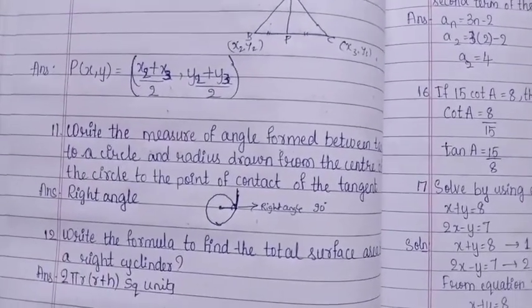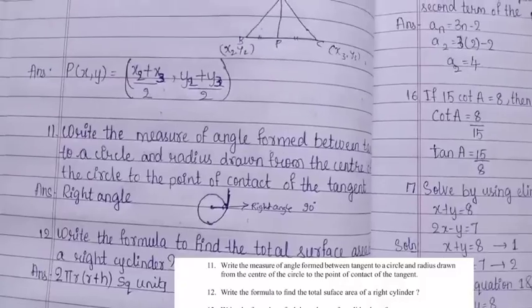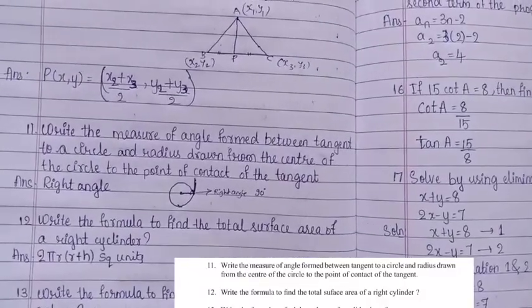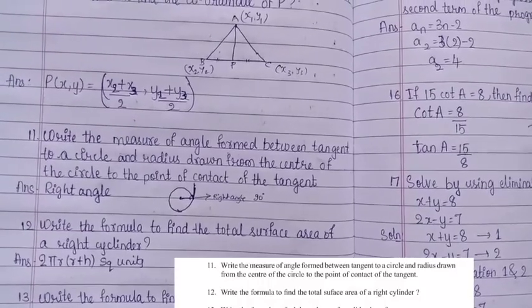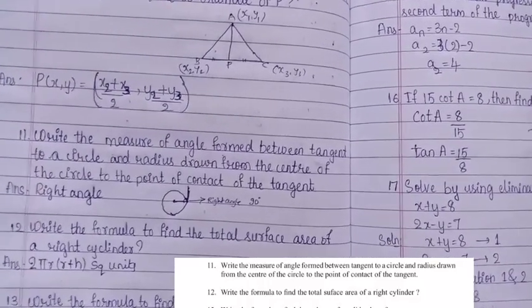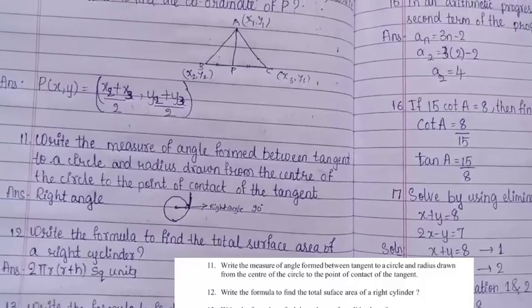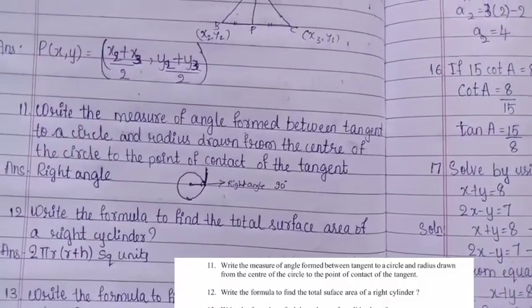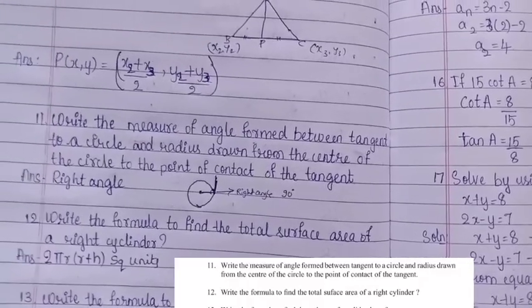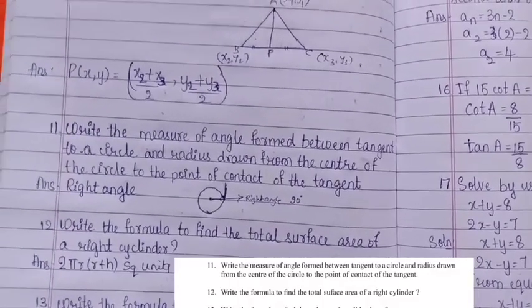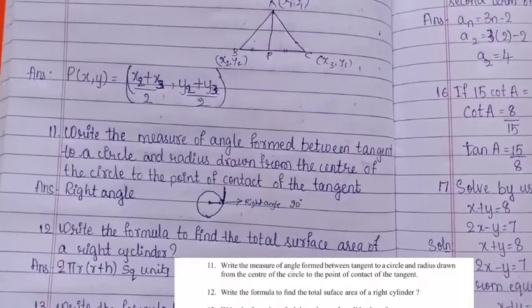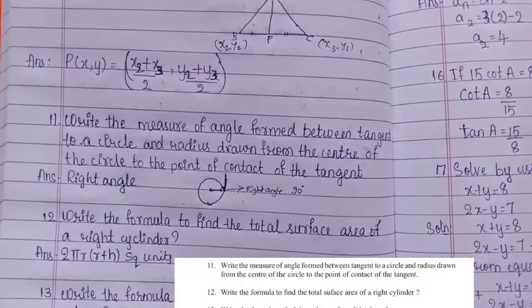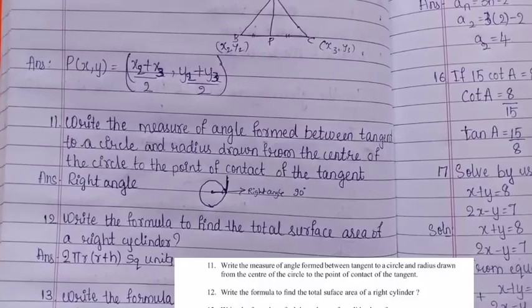Write the measure of the angle formed between a tangent to a circle and the radius drawn from the centre of the circle to the point of contact of the tangent. See the figure — it is 90°, a right angle. The answer is right angle.